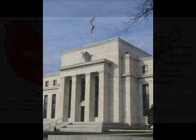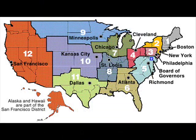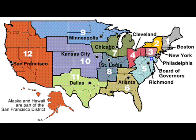The Federal Reserve System is made up of 12 districts, 12 geographic regions in the U.S. Notice how much larger District 12 is than any of the other districts? This reflects the much sparser western population of the U.S. when the Fed was established.